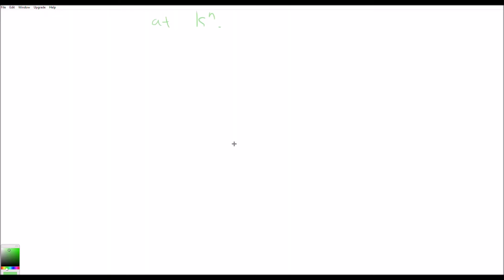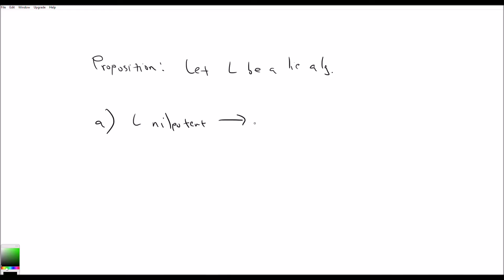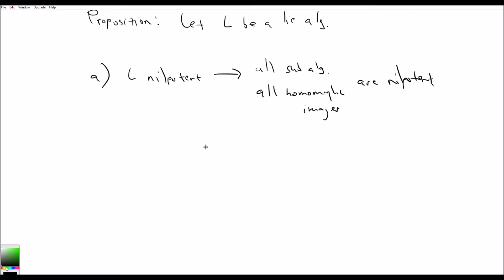Let's move on to some interesting facts that Humphreys introduces. We have the following proposition: let L be a Lie algebra. Then L nilpotent implies all subalgebras of L and all homomorphic images are nilpotent. The proof of this follows almost identically to how we showed it in the previous video with solvability, so I'll leave this to the viewer.